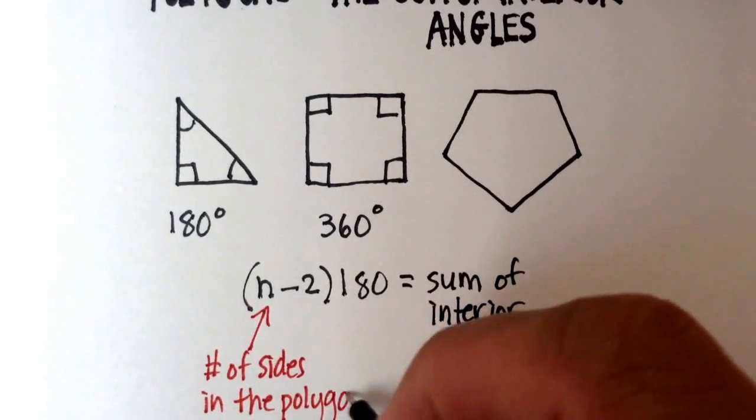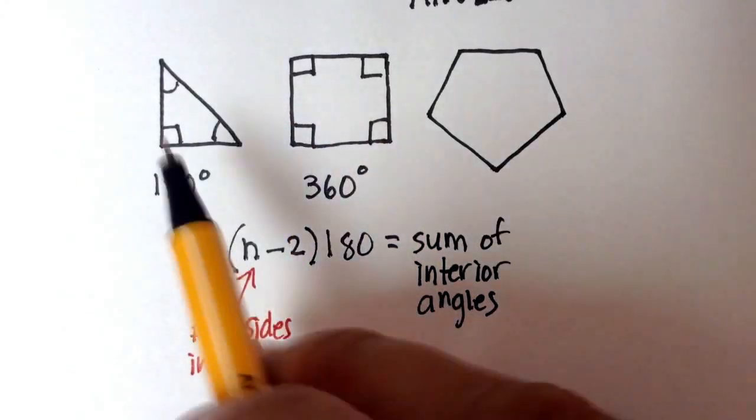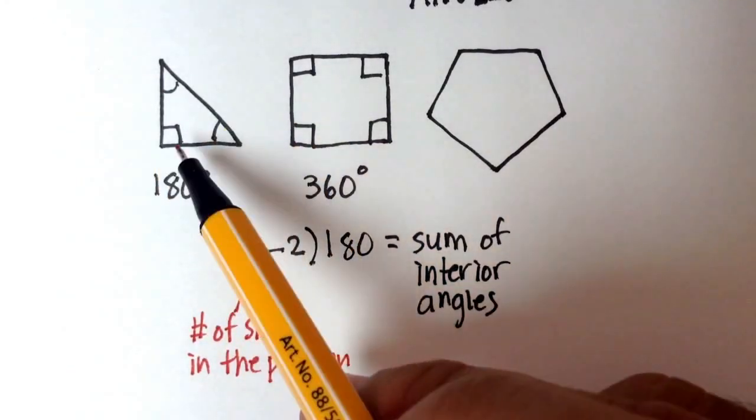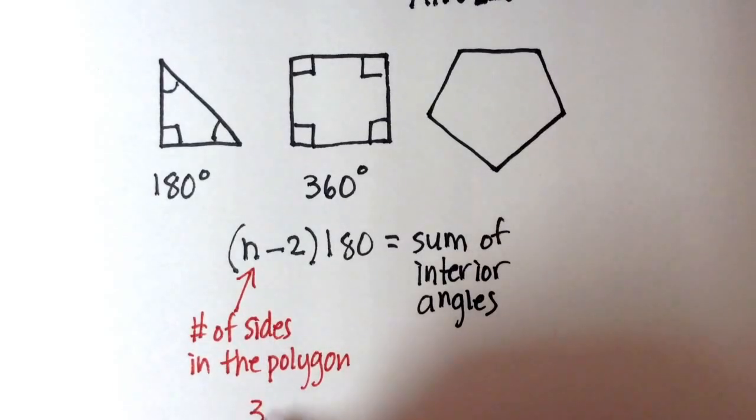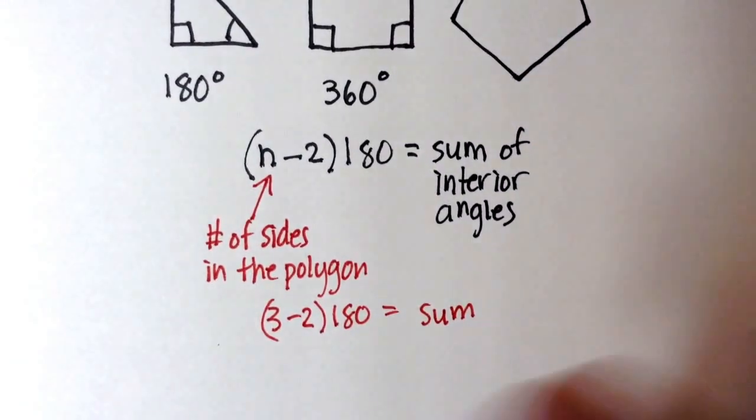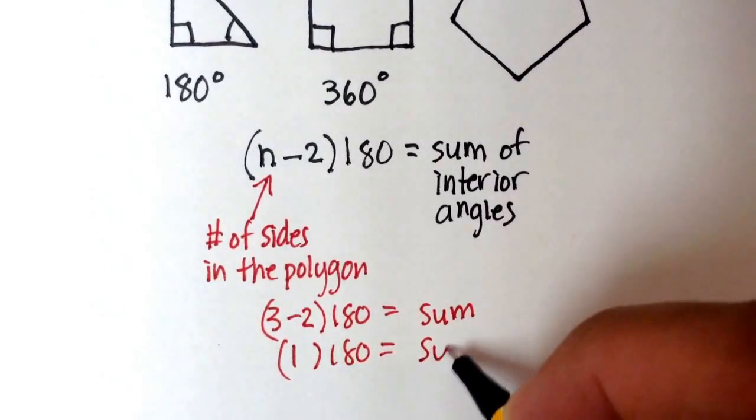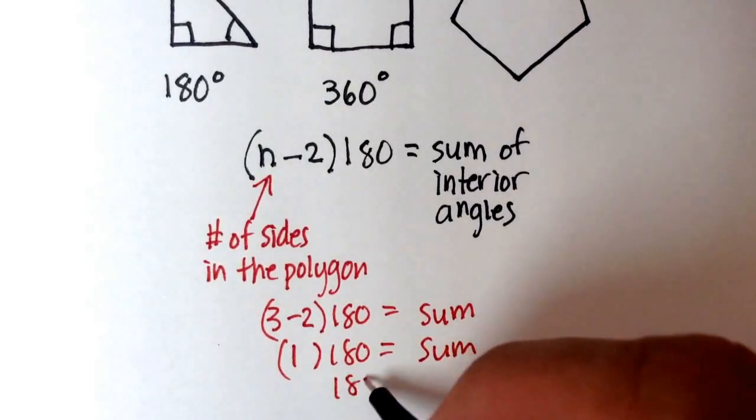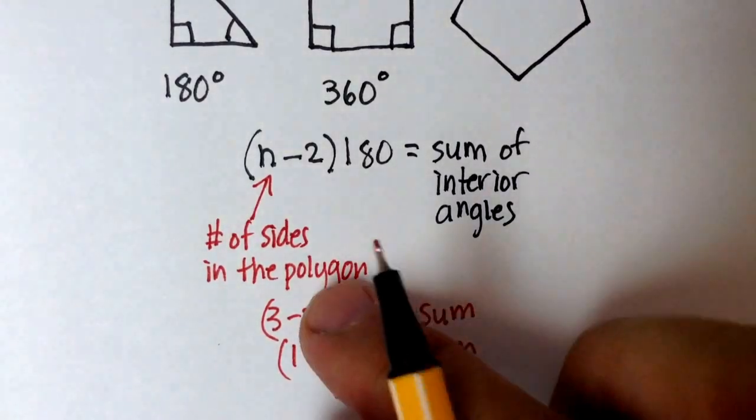Let's see if this formula works with our two that we already know. So, we have three sides in a triangle, so we would put 3 here, so we would say 3 minus 2 times 180 is equal to the sum. That would give us 1 times 180 is equal to the sum, and sure enough, 180 is the sum of the interior angles in a triangle.